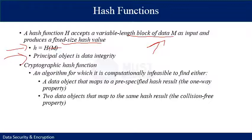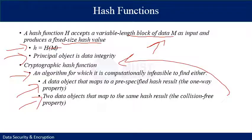A change to any bit or bits in the data results, with high probability, in a change to the hash value. A cryptographic hash function is a kind of function needed for security applications — an algorithm which is computationally infeasible to find either a data object that maps to a pre-specified hash result (the one-way property), or two data objects that map to the same hash result (the collision-free property). Because of these characteristics, hash functions are often used to determine whether data has been changed, providing integrity.